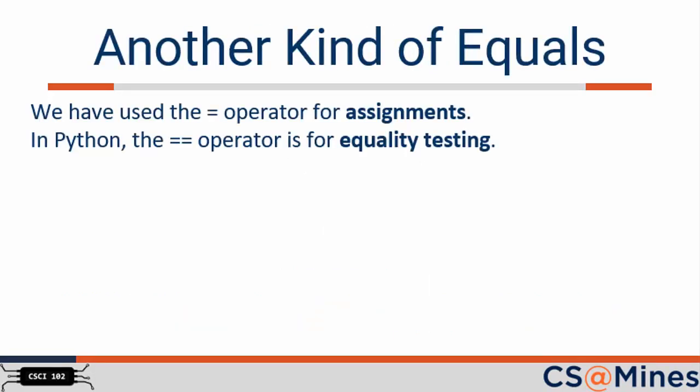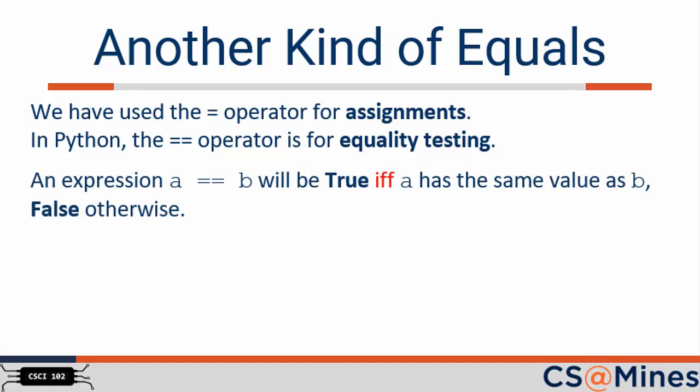You know that a single equal sign in Python is used to assign a value to a variable. But if a single equal sign is used to assign a value, how do we test for equality? Well, in many programming languages, a double equal sign is used to test for equality. For example, variable A double equals B tests whether variable A is equal to variable B, and the result of that test will either be true or false.